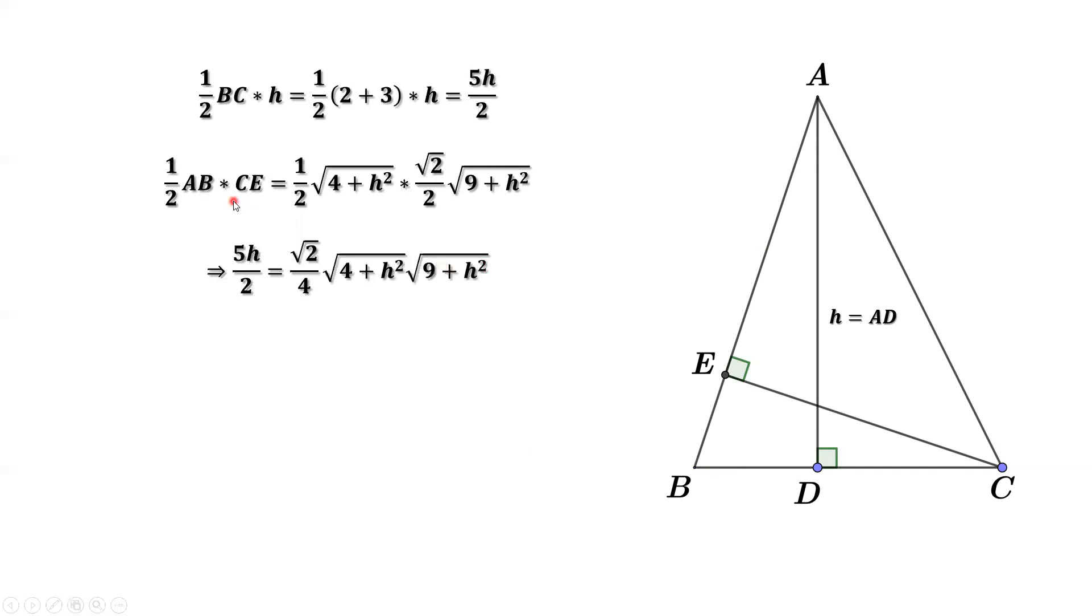The two areas should be the same. We set up this equation. Simplify both sides. We have this. How to get rid of the root sign. We square both sides and simplify. We have this. 4 plus H square times 9 plus H square equals 50H square.